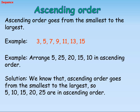Ascending Order. Ascending order goes from the smallest to the largest. Example 3: 7, 9, 11, 13, 15 — these numbers are arranged in ascending order.